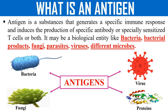Before going into haptens, first of all it should be clear to us what antigens are. An antigen is a substance which is generally foreign to the body, which activates our immune system. Antigens generally include bacteria, viruses, fungi, and proteins. So any foreign substance which activates the immune system is known as an antigen.